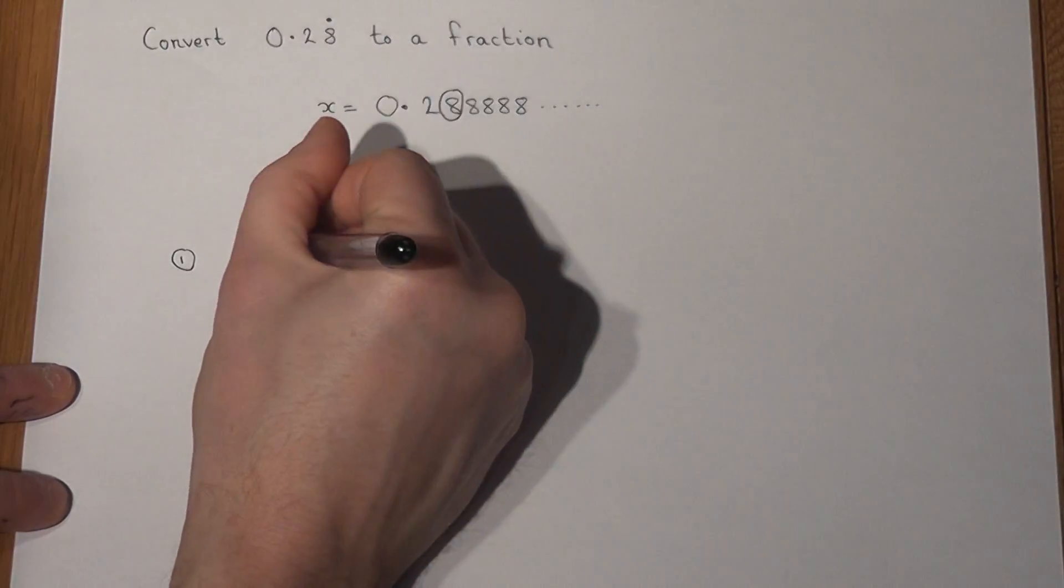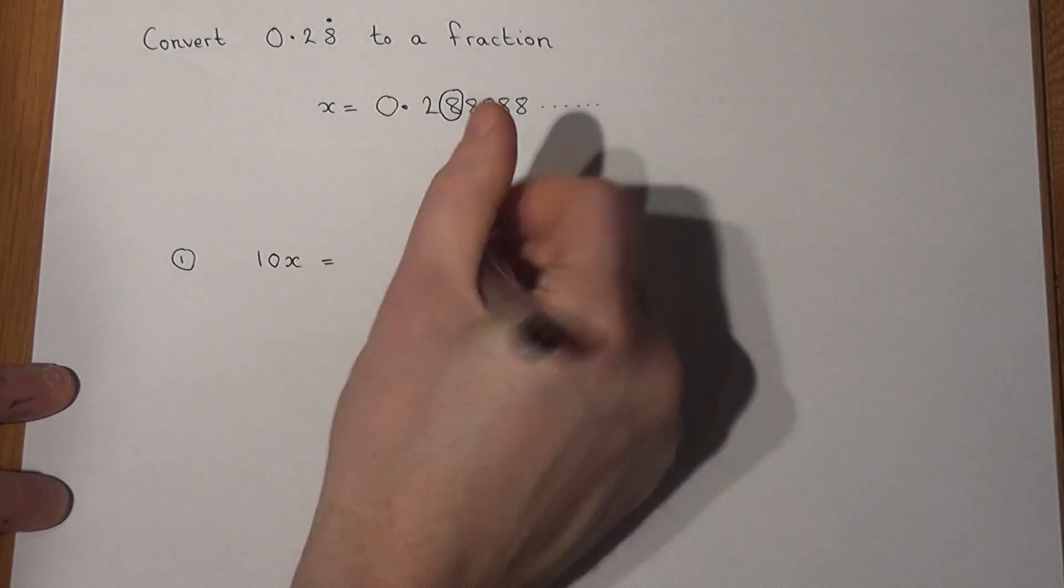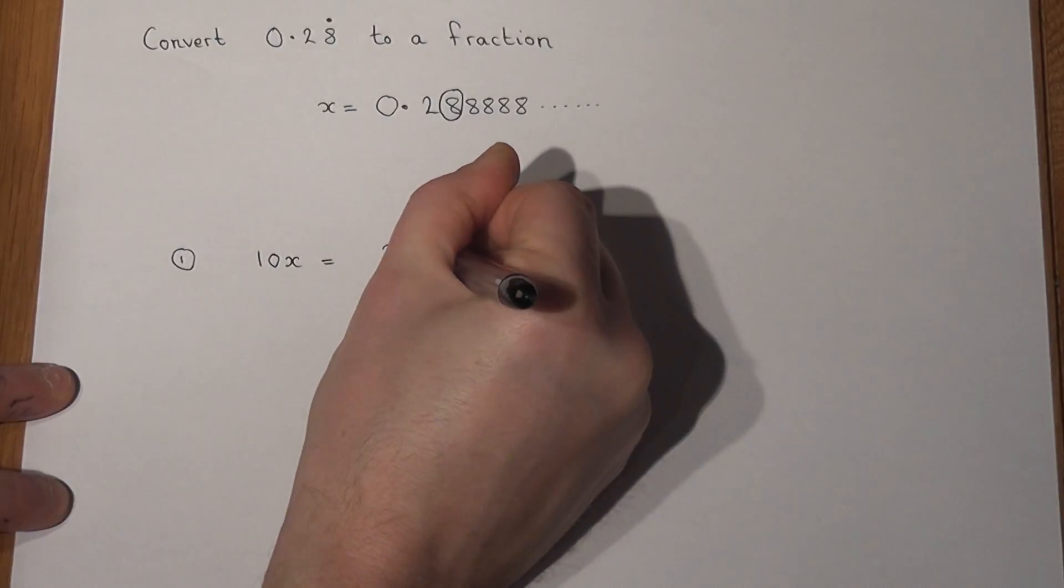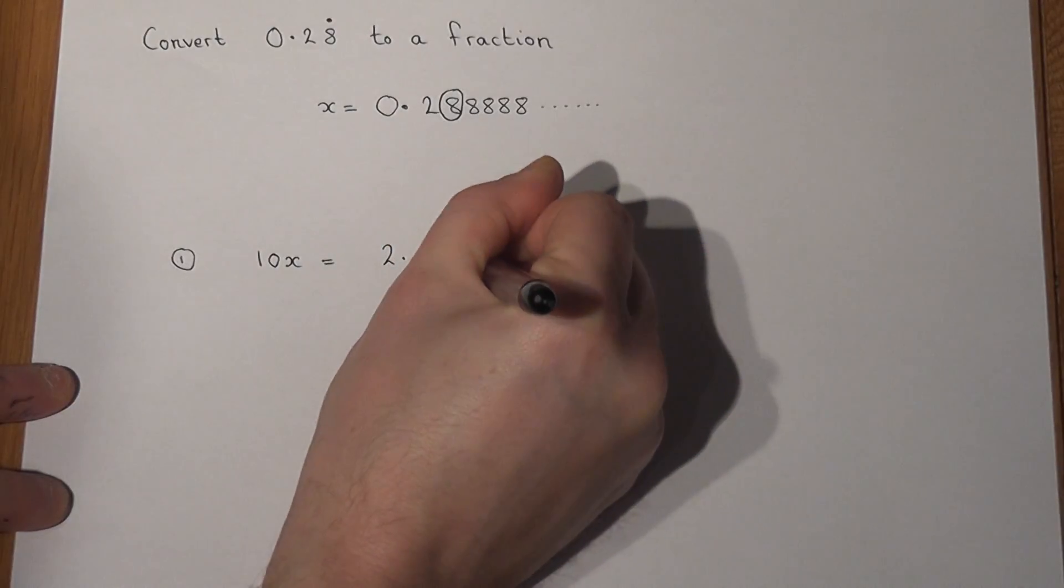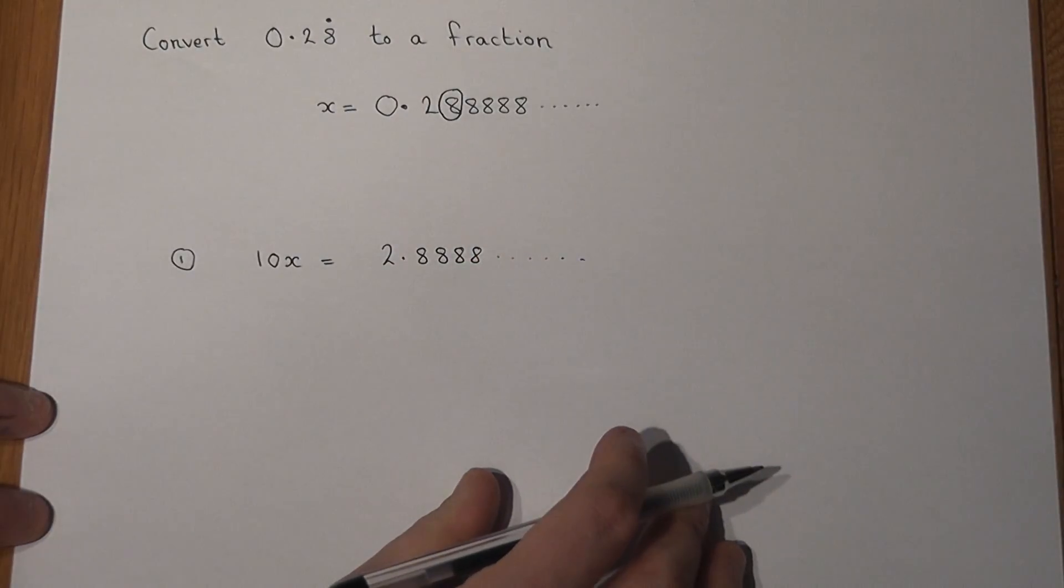So if I do ten lots of X, I get 2.888 and again this number goes on forever.